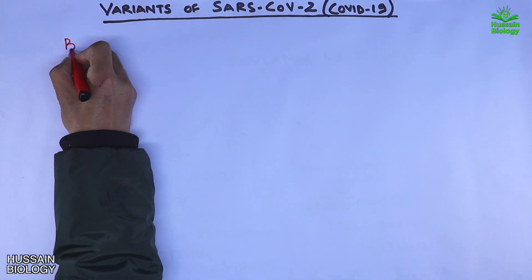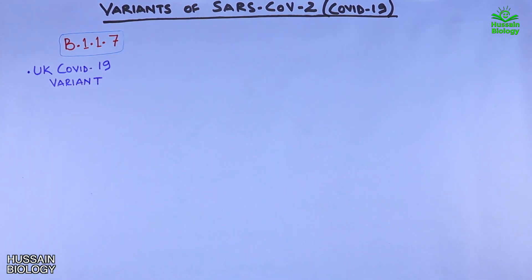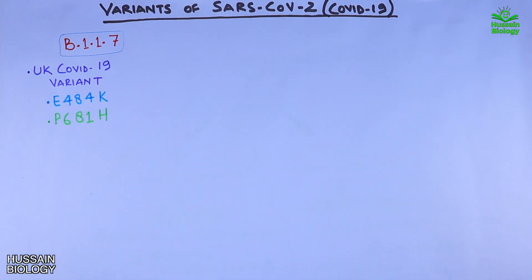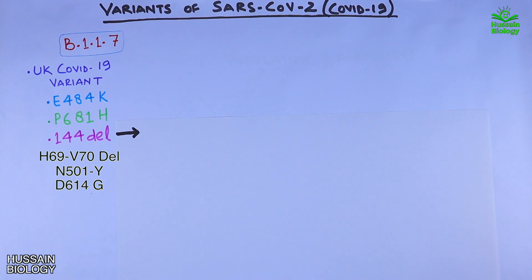First we have B.1.1.7, also known as the UK COVID-19 variant, because this variant predominantly exists in the United Kingdom. This variant has the following important mutations: E484K, P681H, Y144 deletion (144DEL), H69/V70 deletion, N501Y, and D614G mutation. These are the most important mutations seen in the B.1.1.7 variant.